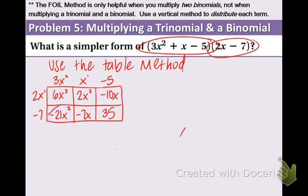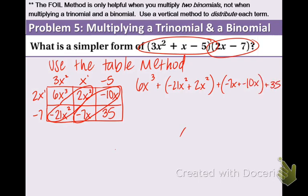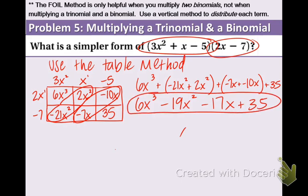Now using the table method, the diagonals should be like terms. And it turns out that they are. So what I suggest you do is write the first term. And then combine the first diagonal. So I just rewrote everything in the boxes. The first term stays the same. The next term becomes a negative nineteen x squared. Because that's what happens when you add a negative twenty one and a two. And then next we have negative seventeen x. Negative seven plus a negative ten is a negative seventeen. And the positive thirty five comes down. There are no like terms. So therefore this is the answer. And that was pretty pain free.